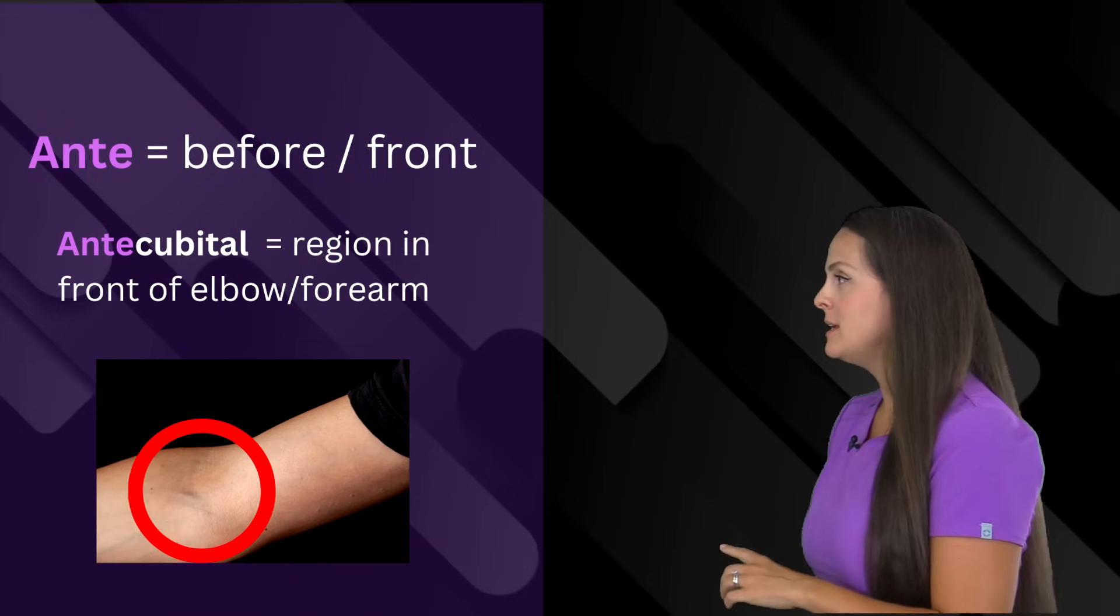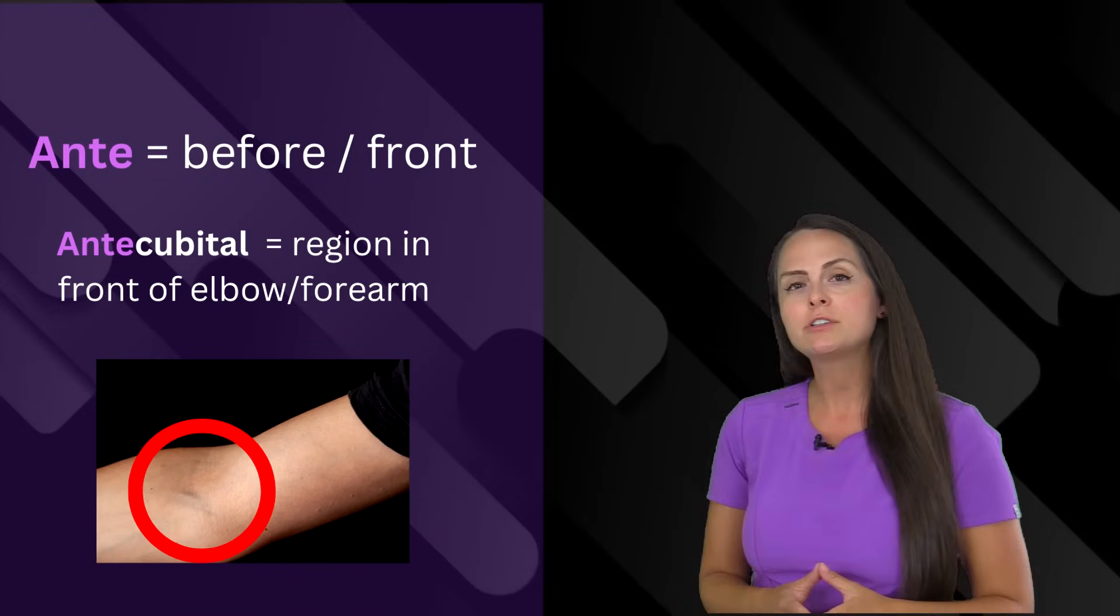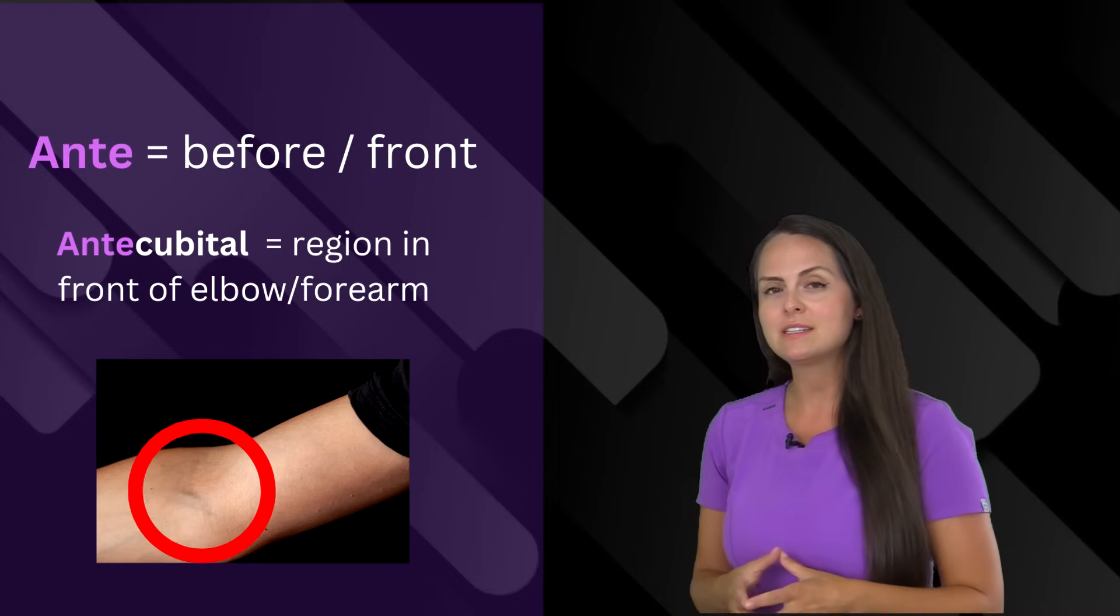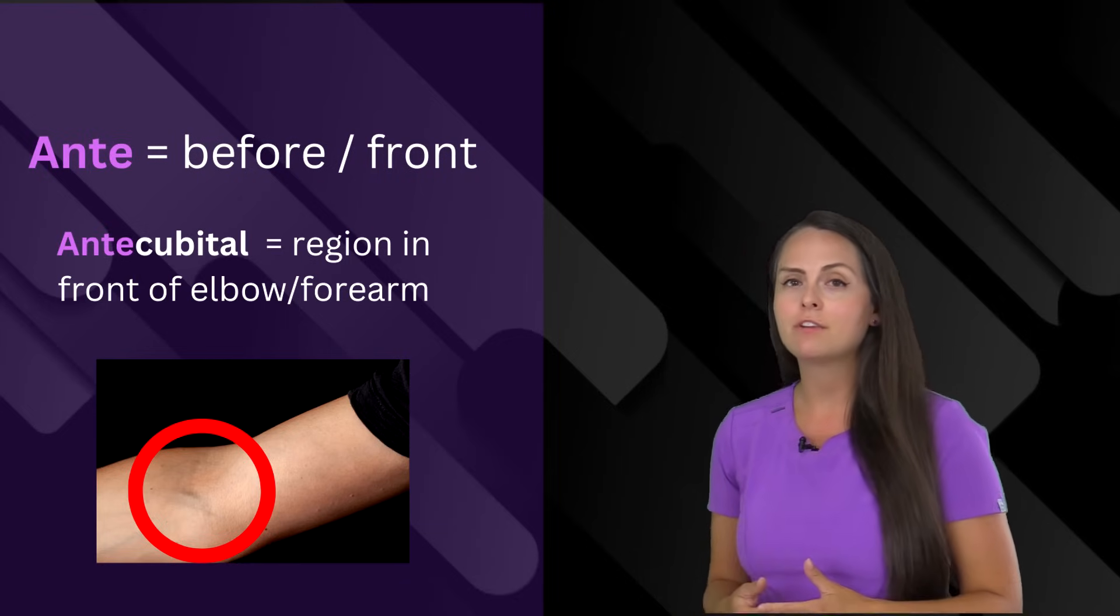And then anti means before or in front of. So whenever we're talking about antecubital, this is the region before or in front of the elbow.